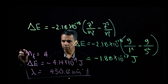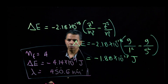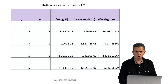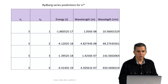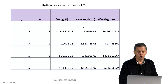So 450.6 nanometers is the correct answer for this particular problem. This table summarizes the transitions that could be observed for n initial equals 5, with possible n final values — any number lower than 5 — the corresponding energy calculated with the Rydberg series, the corresponding wavelength, and the conversion from meters to nanometers. As we can see, the only solution is n final equals 4, with a wavelength of 450 nanometers.